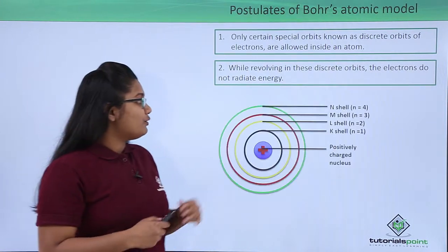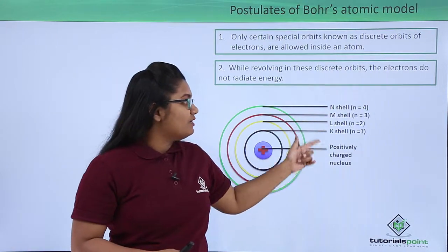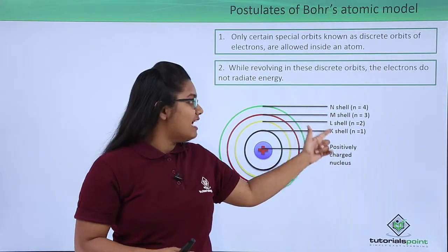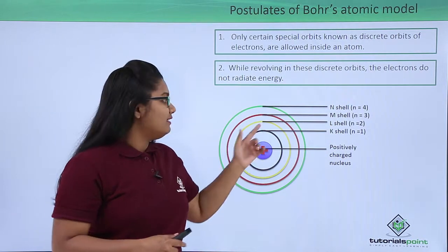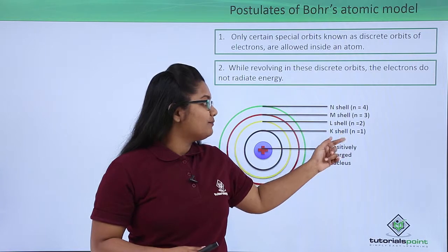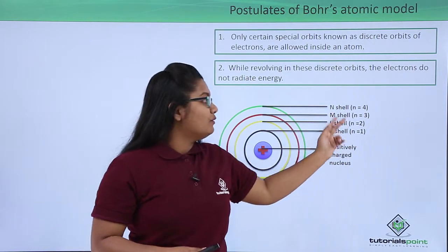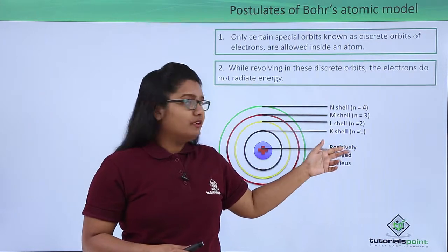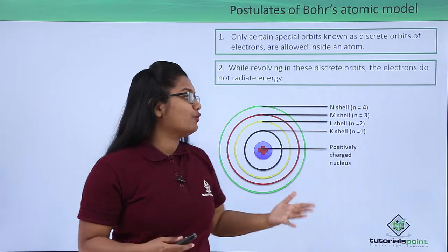Now the electrons in these discrete orbits are grouped into shells which he named as K shell, L shell, M shell, and N shell. Also, these shells were numbered as N equals 1 for K shell, N equals 2 for L shell, and values of 3 and 4 for M and N shells, and so on.